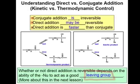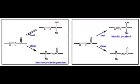A third key point is that direct addition is faster than conjugate, which means that the kinetic product, or the product that's formed more quickly, regardless of the nucleophile used, will be the direct addition product.